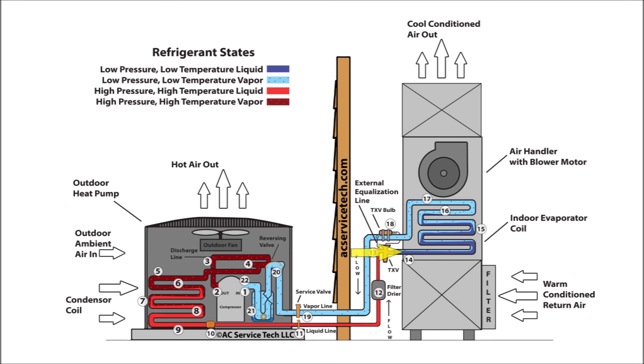At step fourteen, the liquid exits the metering device as a low pressure, low temperature liquid refrigerant. But this liquid rapidly expands into a mixture of 80% liquid and 20% vapor due to the lack of pressure and availability of space. The refrigerant then absorbs heat in the evaporator.